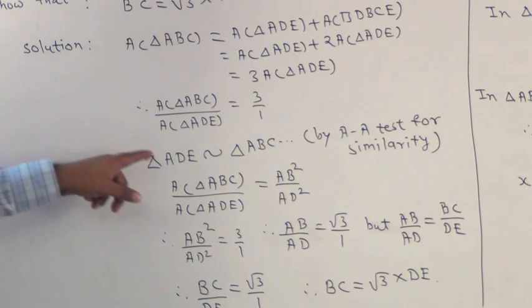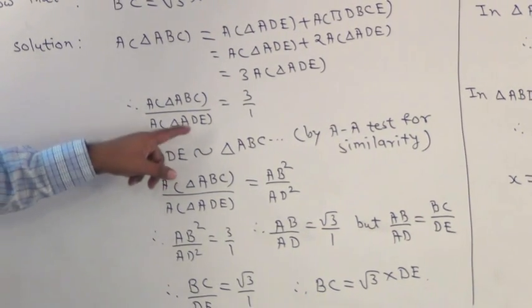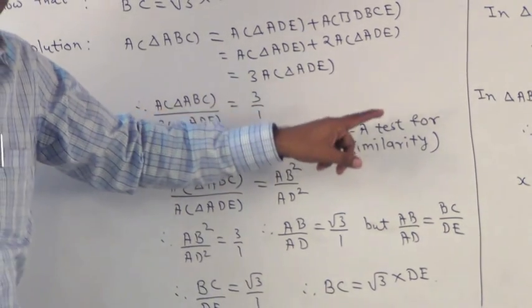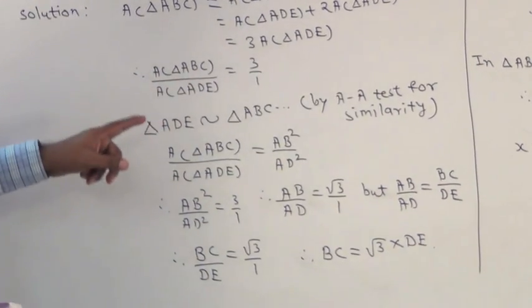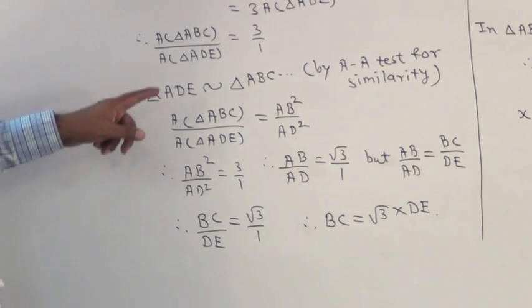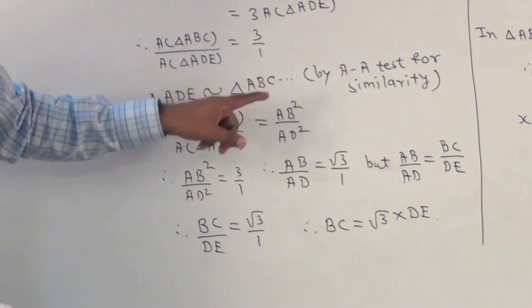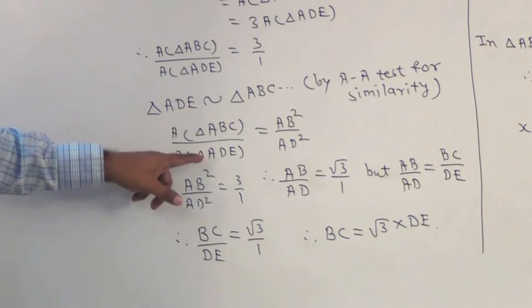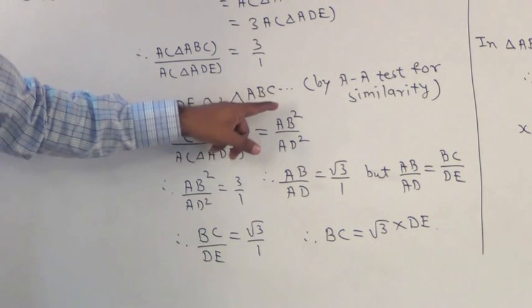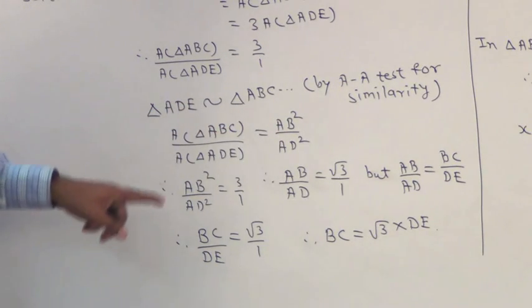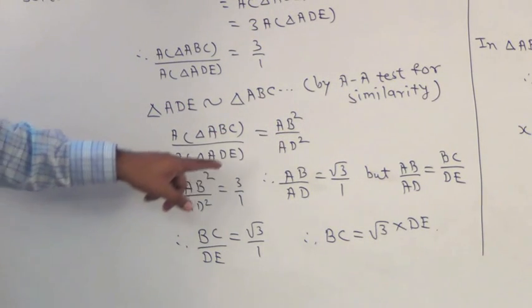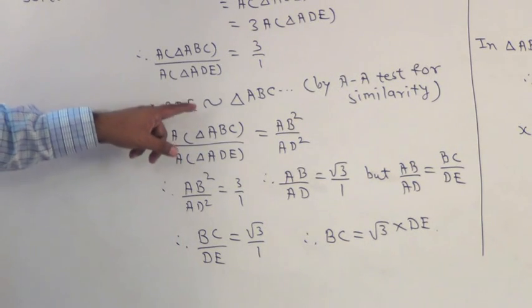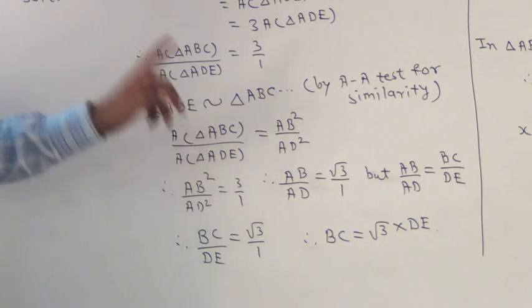Triangle ADE is similar to triangle ABC by the AA test for similarity. We know that areas of similar triangles are proportional to the square of their corresponding sides. So area of triangle ABC upon area of triangle ADE equals AB² upon AD², which equals 3:1.